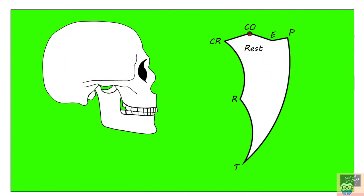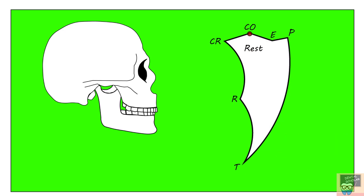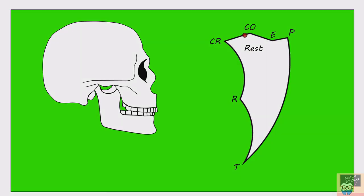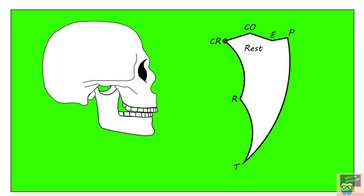Let us now look at mandibular movement in the sagittal plane. The geometrical shape you see on your right is the envelope of motion of the mandible in the sagittal plane, and it is beak-shaped. The highest point is the maximum intercuspation or centric occlusion position. From here, when you retreat the mandible, it goes from centric occlusion into the centric relation position, which is the posterior-most point on the superior border.